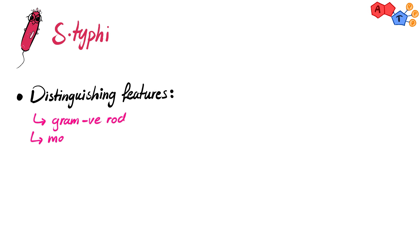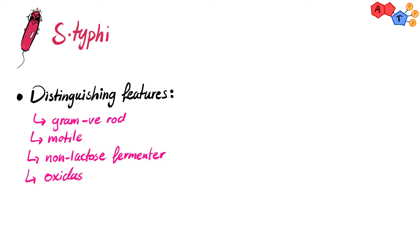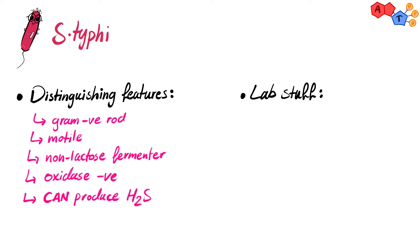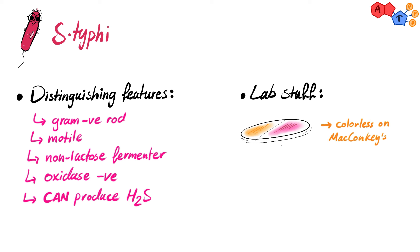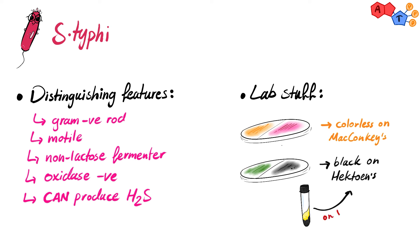Salmonella is a gram negative rod. She is motile, non-lactose fermenter, oxidase negative, and can produce hydrogen sulfide. Salmonella species grow in colorless colonies on McConkey's agar since they can't ferment lactose. And since Salmonella produces hydrogen sulfide, Salmonella species will grow in black colonies on Hektoen's agar and TSI agar.